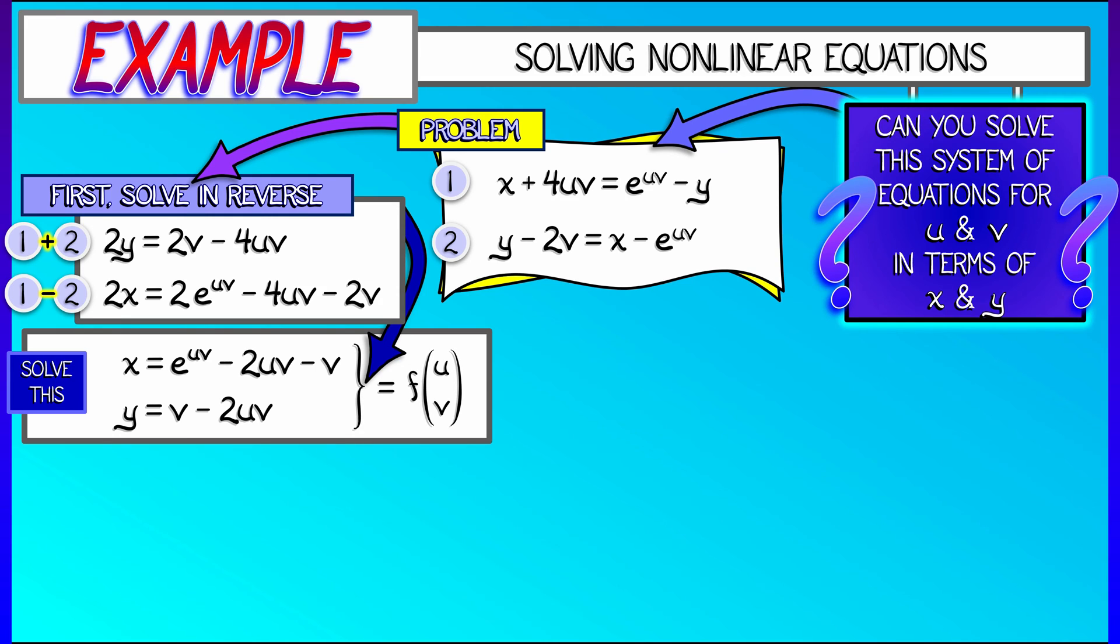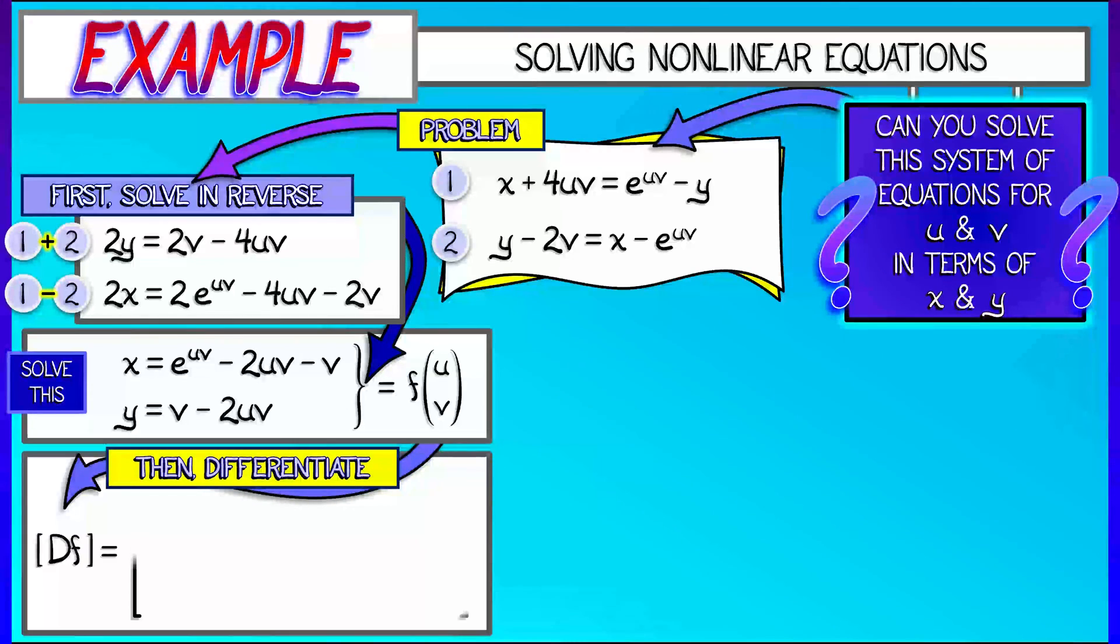And now what I want to know is where is this function invertible? The inverse function theorem says, hey, compute the derivative. When I take the partials in u, I get v e to the uv minus 2v, and then minus 2v.